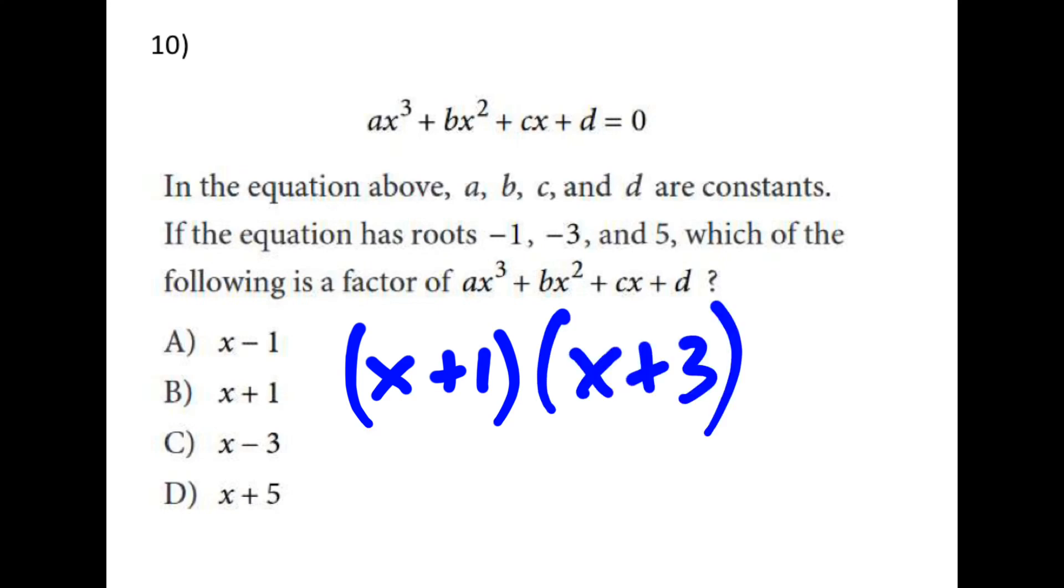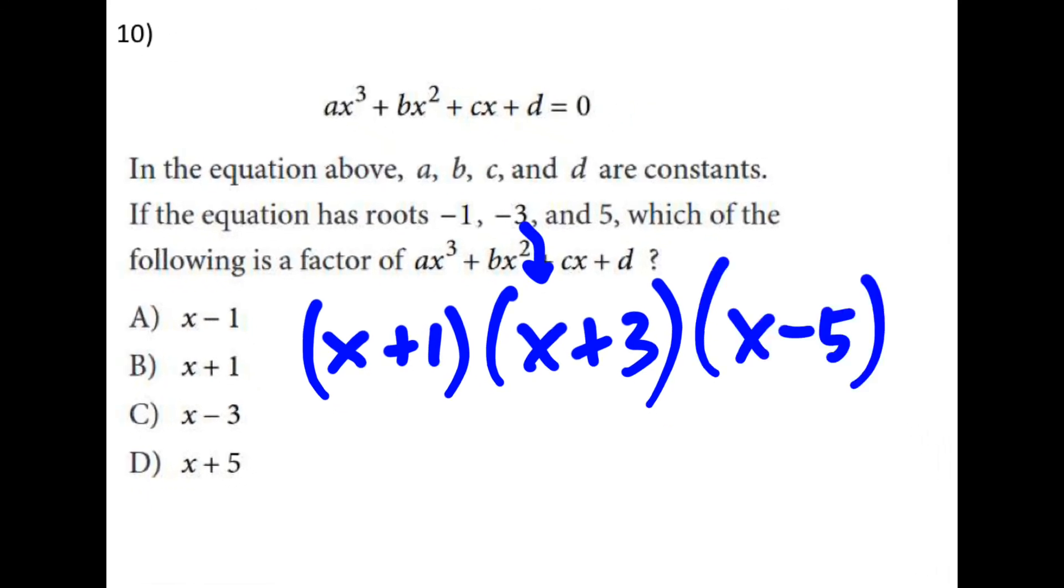If my root is negative 3, my factor is x plus 3. Because if I plug in that negative 3, it gives me 0. And the last factor there is going to be x minus 5. Because if I plug in a 5, it gives me 0. So they want to know which one of the following is a factor. b is the only one on this list.